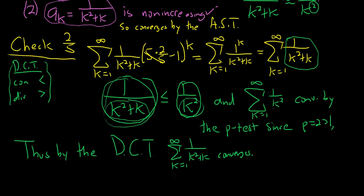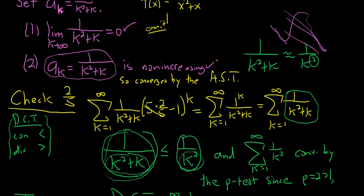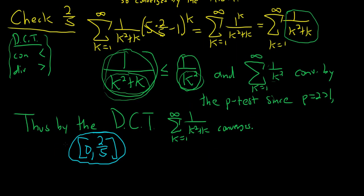So we include a bracket at 2/5 as well. The final answer is the closed interval [0, 2/5], because both endpoints converge. I used less than or equal to in the comparison, which allows for equality. Whenever you're unsure, feel free to use less than or equal to and greater than or equal to when doing the direct comparison test as a safety measure.